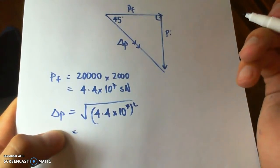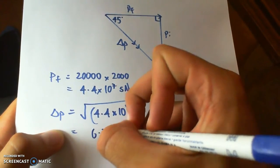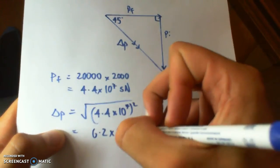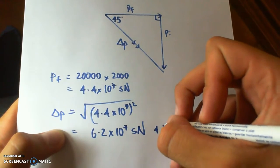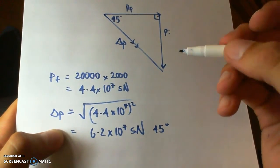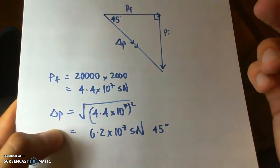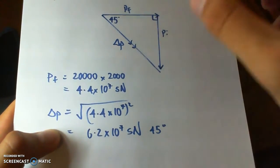Which we get an answer of 6.2 times 10 to the 7 at 45 degrees in that direction.